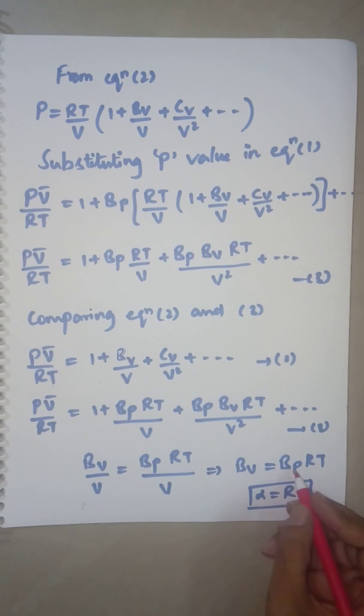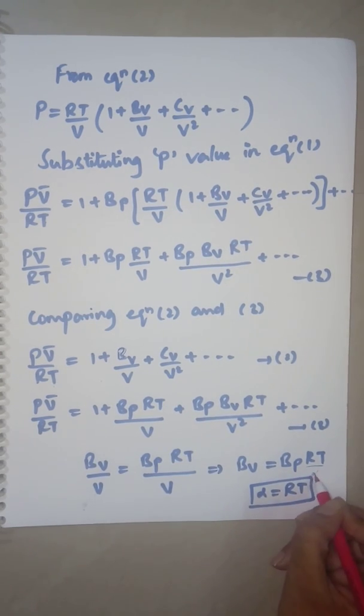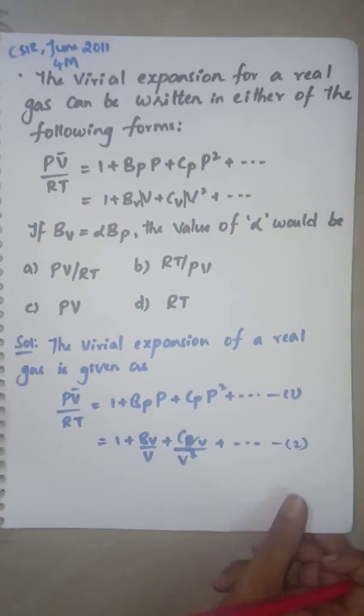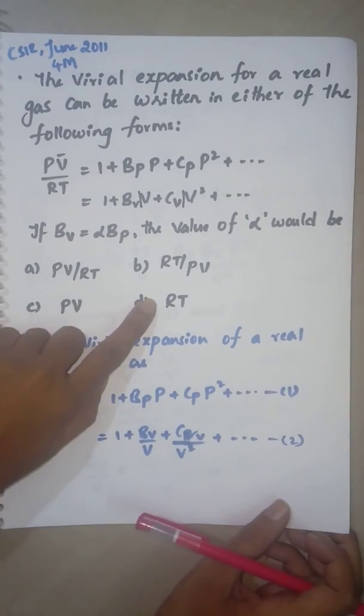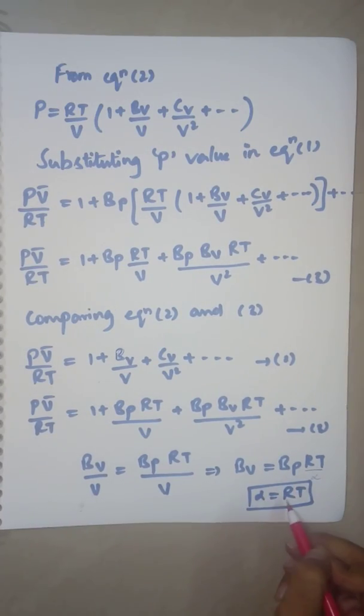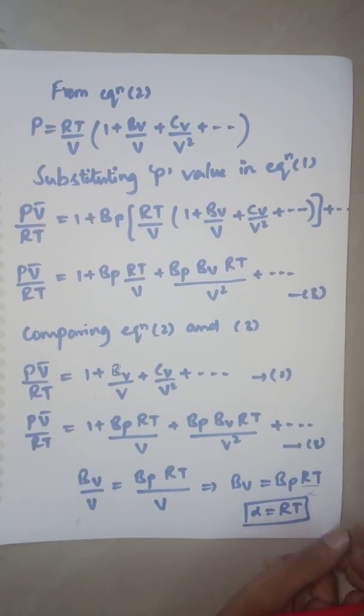In the given question it was BV = αBP, and you just had to find out what is that alpha value. You were given options: PV/RT, RT/PV, PV, and RT. So what is the right option? D - that is, α equals RT. Such a simple question for four marks in CSIR.